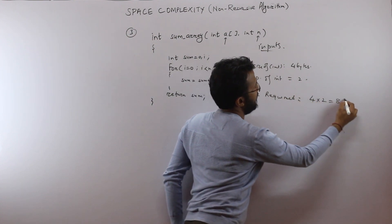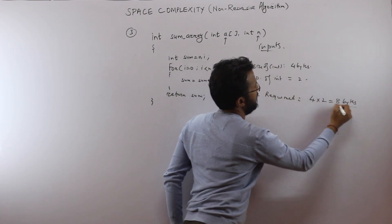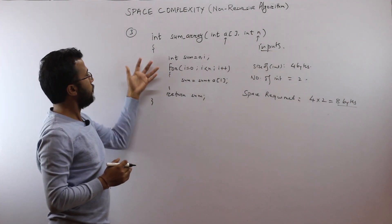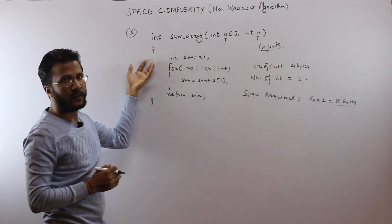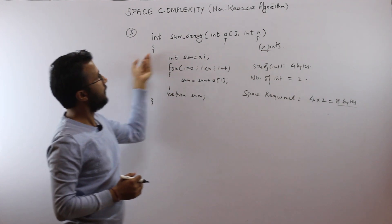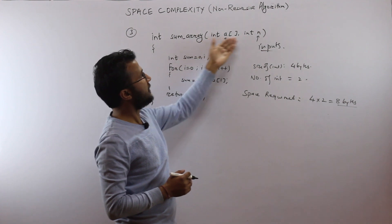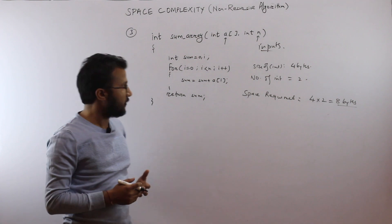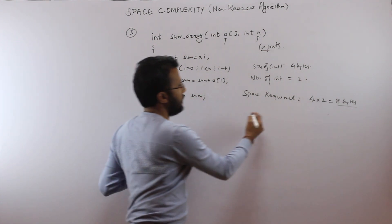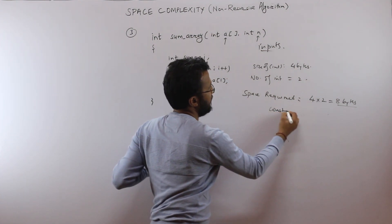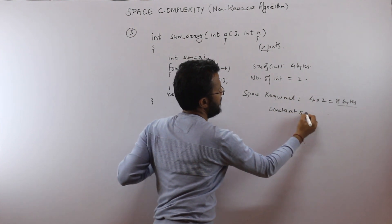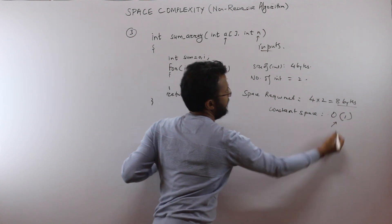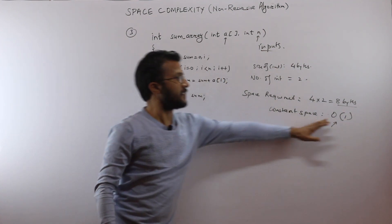Assuming size of int is 4 bytes, we have 2 integer variables. Space required is 4 bytes for 'sum' and 4 bytes for 'i', so it is 4 × 2 = 8 bytes. It requires 8 bytes of space to execute this function. Whatever may be the value of 'a' and whatever may be the size of 'n', we always require 8 bytes, so it takes constant space — O(1) asymptotically.